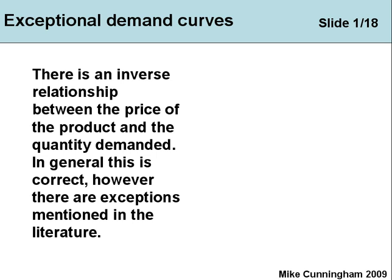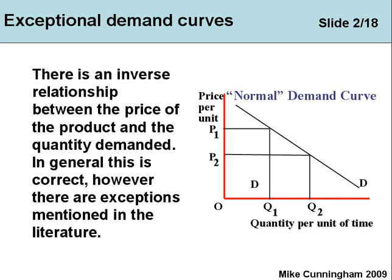Our normal demand curve would be something like what we've got here: as the price falls from P1 to P2, the quantity demanded increases from Q1 to Q2. As the price falls it's cheaper, so we buy more.